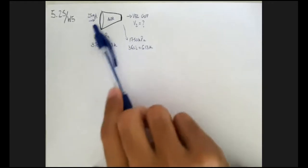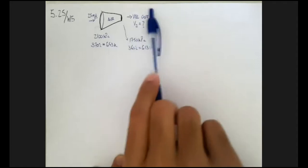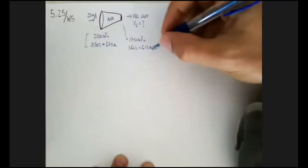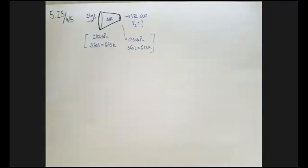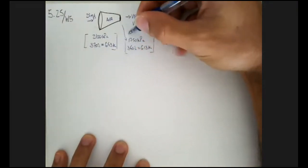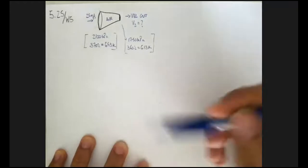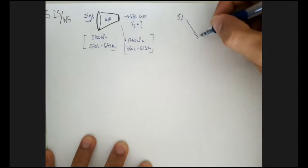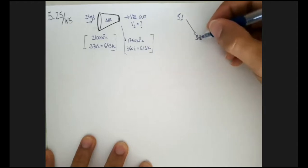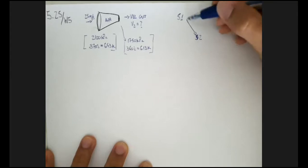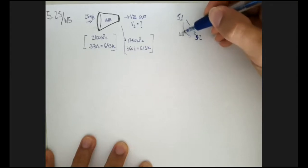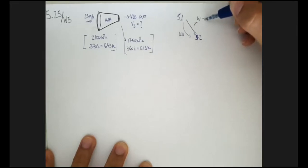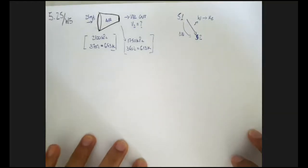We have this nozzle with air going in at 25 meters per second, and it's leaving at a velocity we're not sure of. We know the inlet properties and the outlet properties. The idea of these nozzles is that state two is lower in energy than state one — we're taking advantage of this decrease in energy state, this delta u that's decreasing, and using it to boost the kinetic energy of the air.